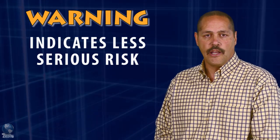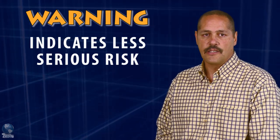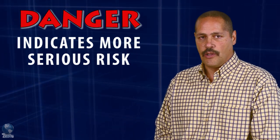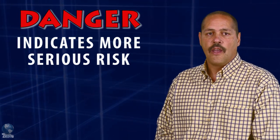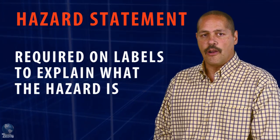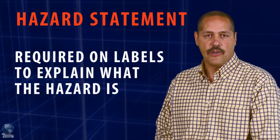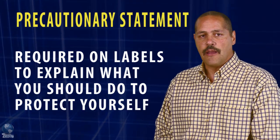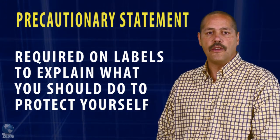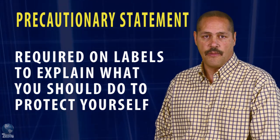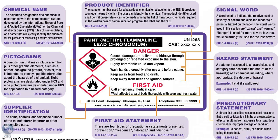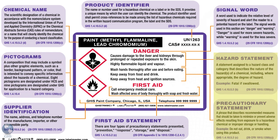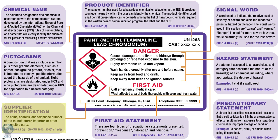The signal word 'warning' will indicate less serious risks, and the signal word 'danger' will indicate more serious risk. Hazard statements will be required on labels to explain what the hazard is. Precautionary statements will be required to explain what you should do to protect yourself from the hazard. All labels will be required to have pictograms, a signal word, hazard and precautionary statements, the product identifier, and supplier identification.